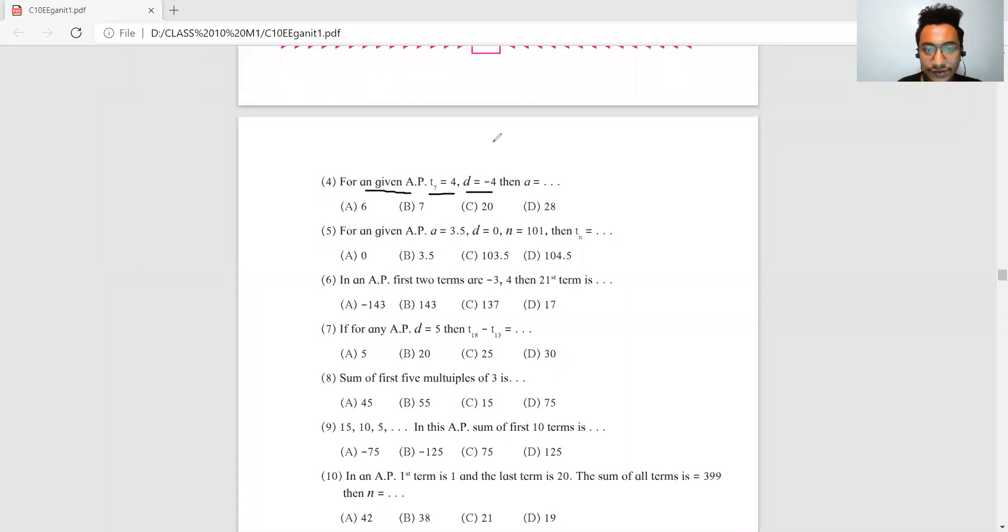For an AP, given T7 is 4, d equals -4, find the value of a. So write: T7 equals a plus (7-1) multiplied by -4. T7's value is 4, so 4 equals a plus 6 multiplied by -4. Therefore, 4 plus 24 equals a. The value of a is 28.